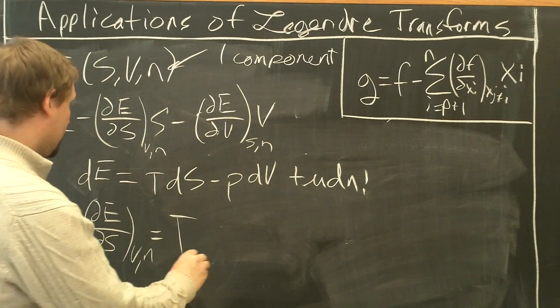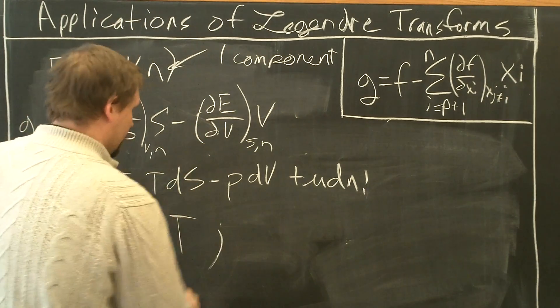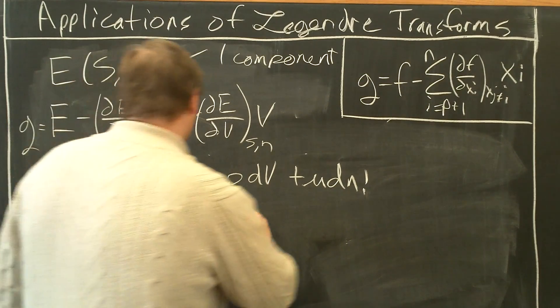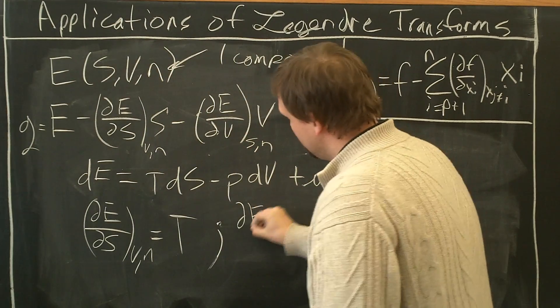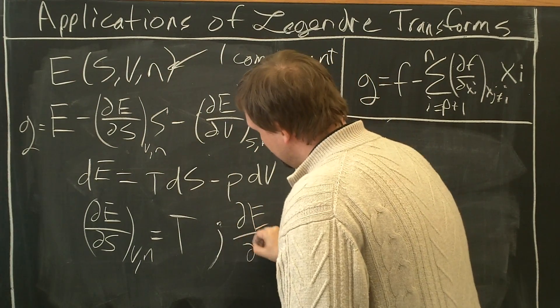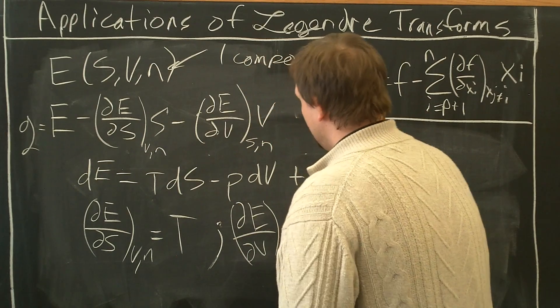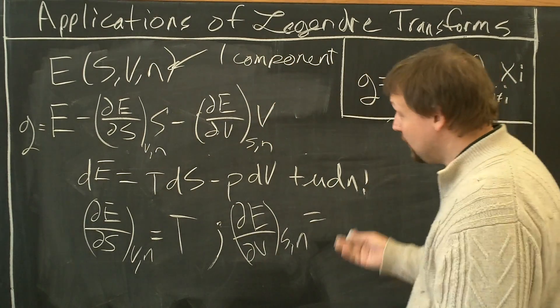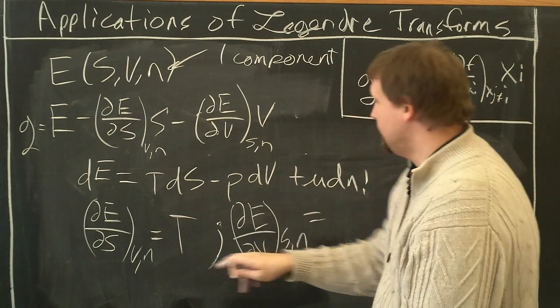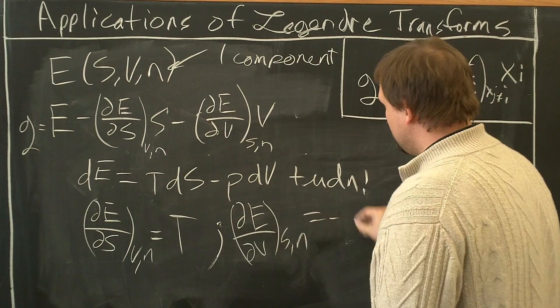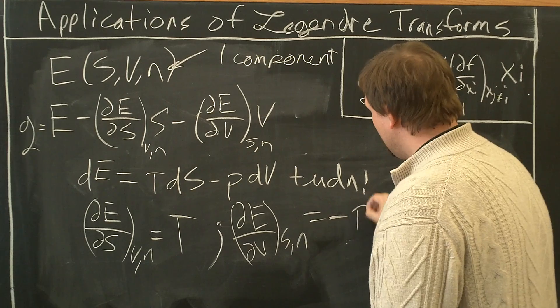Now, dE/dV. I'll make a semicolon there. Partial E with respect to V, everything else we have to fix, S, N, equals what? Well, dE/dV, everything else we have to fix, minus P.